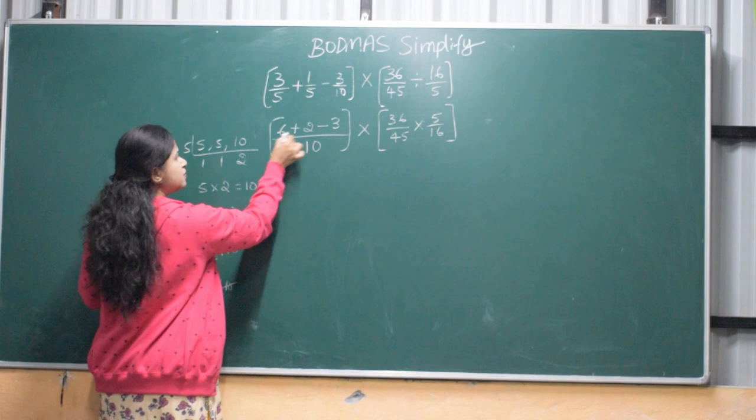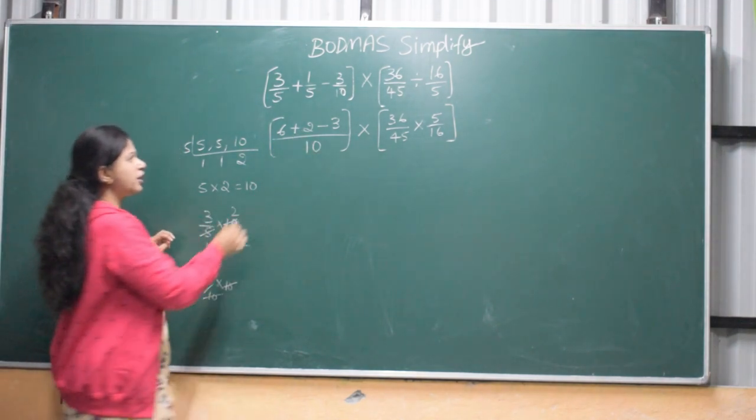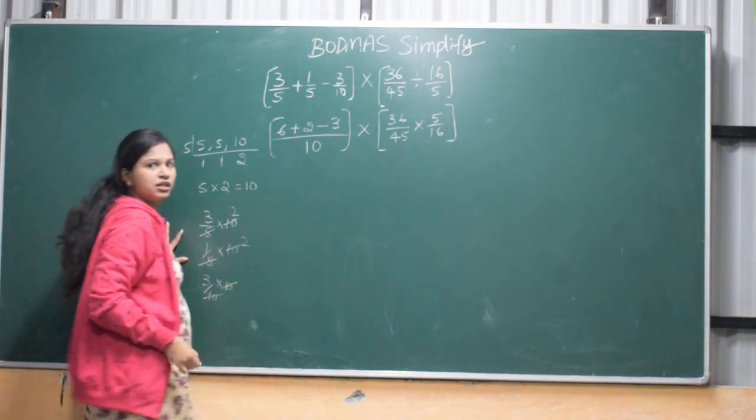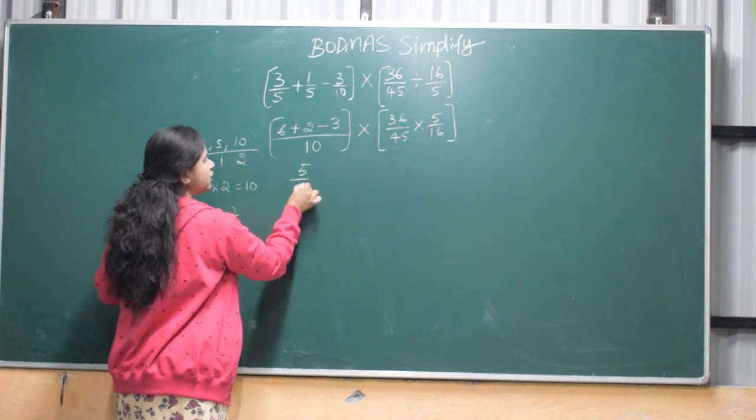We will add 6 plus how much? 6, 7, 8. 8 minus 3, 8 minus 3 is equal to 5. This is 5 by 10.